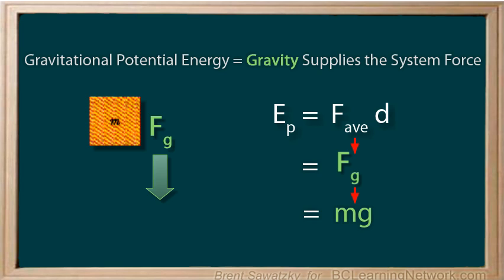So plugging this in for F and we get Ep equals mgd. And since the distance, in the case of gravitational potential energy, is always how high you're lifting something, we often replace the d with an h. And that makes our final equation Ep equals mgh. Again, m is the mass of the object, g is our gravitational constant, 9.8 meters per second squared, and h is the height you lifted the block.